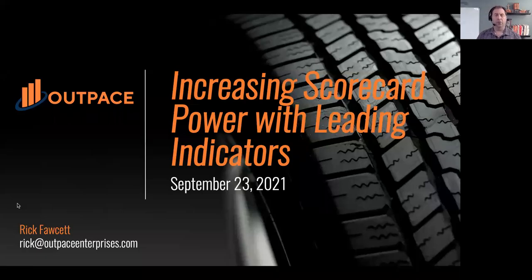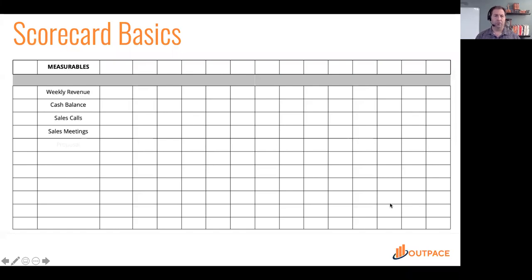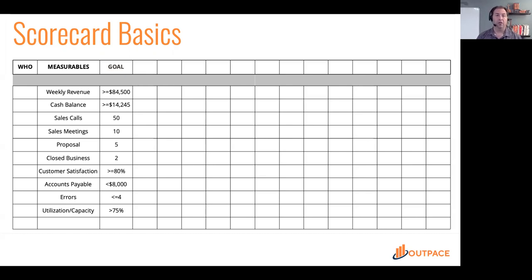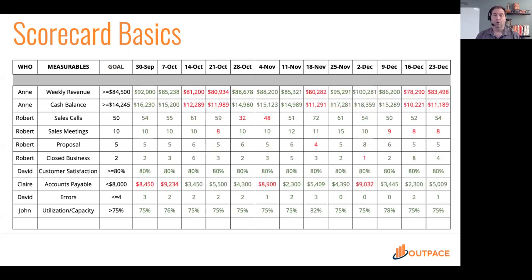This video is all about how to increase the power of our scorecard with leading indicators. Getting leading indicators into our scorecards is actually pretty challenging, but once we get it, it is immensely powerful. In EOS, we have a very structured scorecard — we want to know the five to fifteen measurables that determine the success or failure of our department or company.